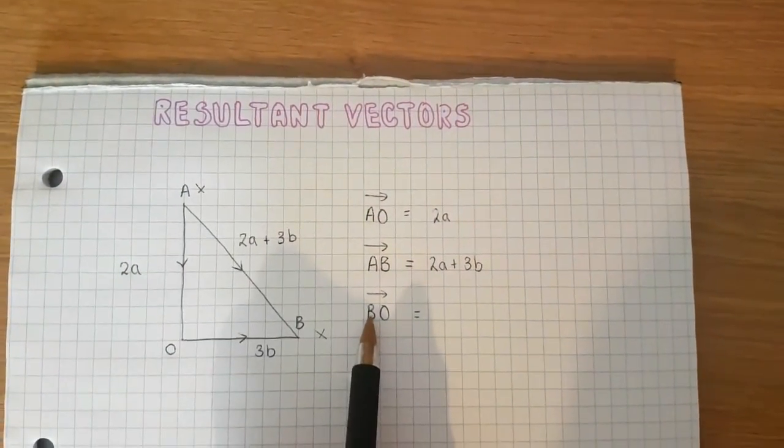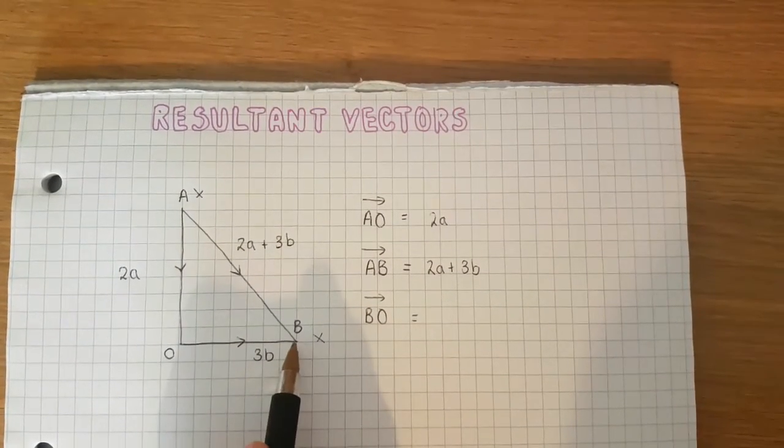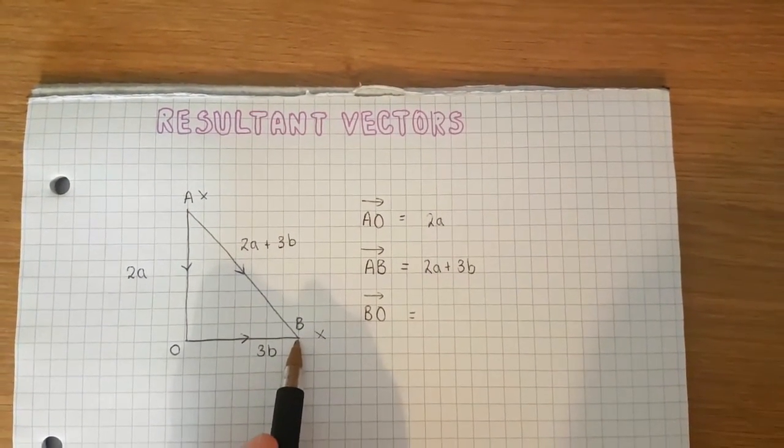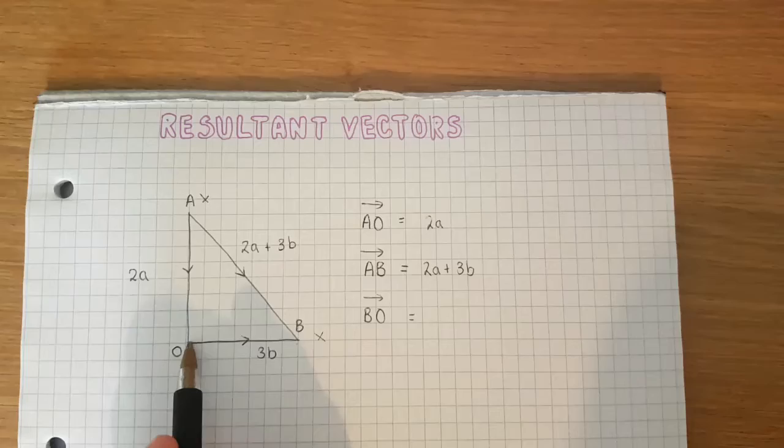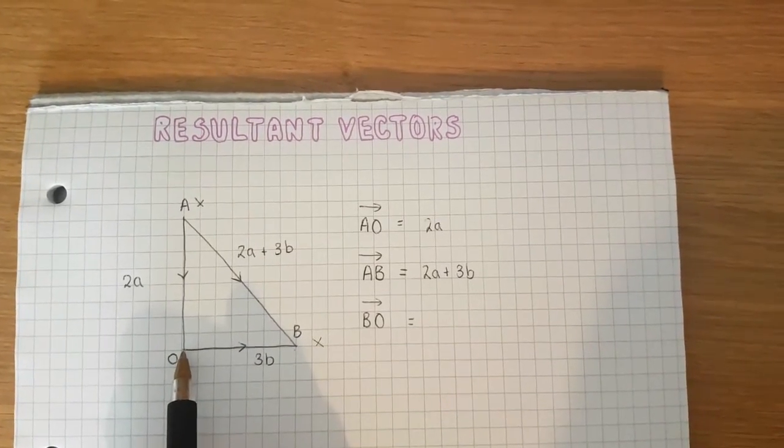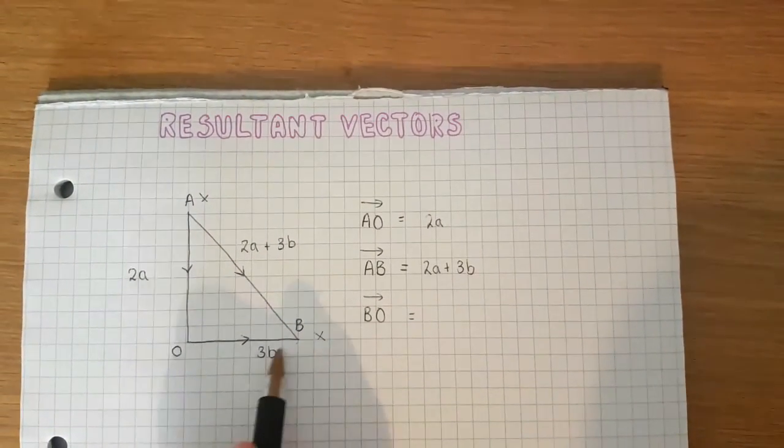My last vector is B to O, so I'm starting from this point and I want to go to this point here. The only problem is that I've got a vector to describe this line, but that's going from this way to this way.